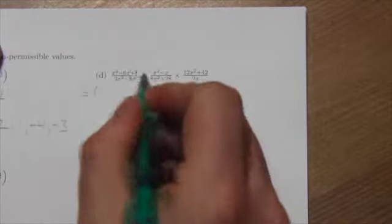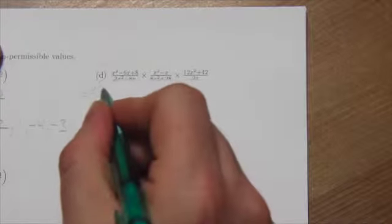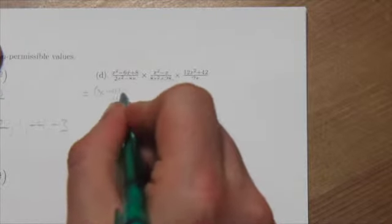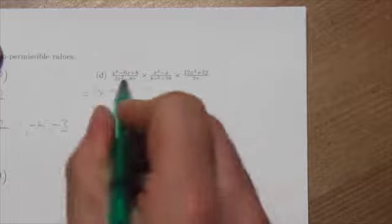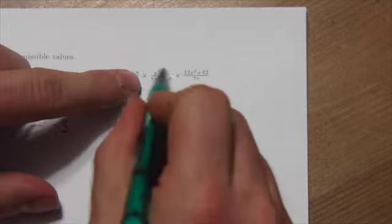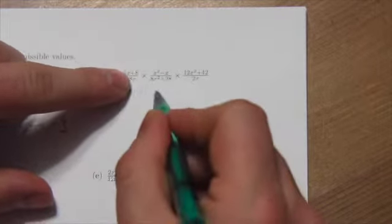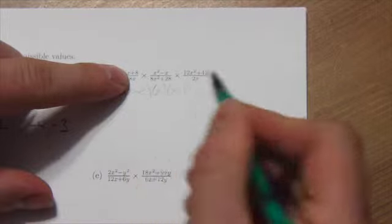This first one, I'm looking for factors of 8 that add to negative 6, so it's going to be (x - 4)(x - 2). In the second term, the numerator has a common factor of x, and I'm left with x(x - 1).